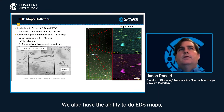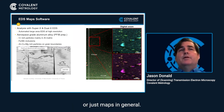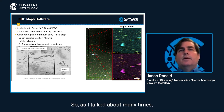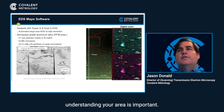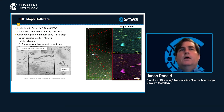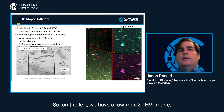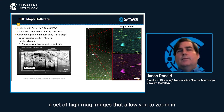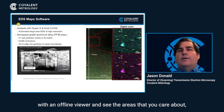We also have the ability to do EDS maps, or just maps in general. The way to think of maps is this is basically Google Earth for your STEM. Understanding your area is important, so on the left we have a low-mag STEM image. We can then go through and stitch together a set of high-mag images that allow you to zoom in with an offline viewer and see the areas that you care about.